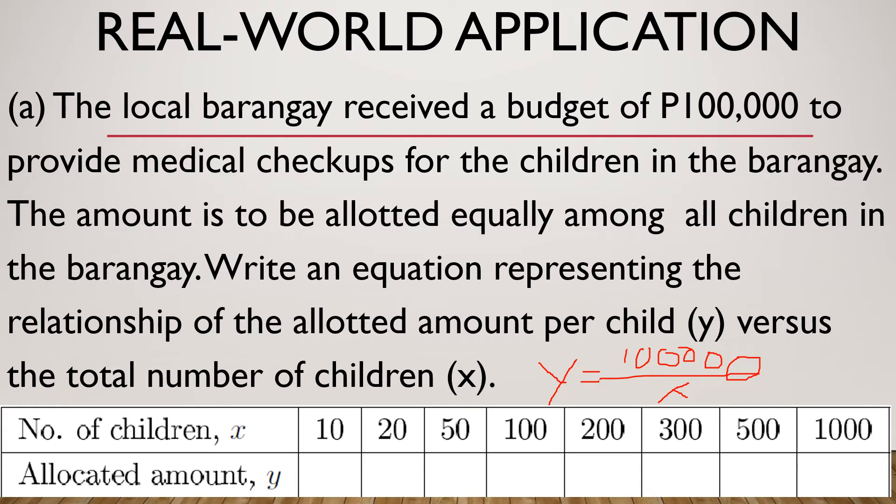So that is how it will be. So in other words, for us to obtain the allotted amount given the number of children, we just need to divide 100,000. For instance, in this case, 100,000 divided by 10 gives us 10,000. And if the number of children is 1,000, 100,000 divided by 1,000 will be 100.